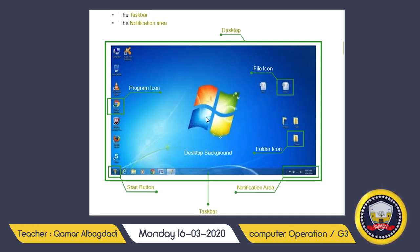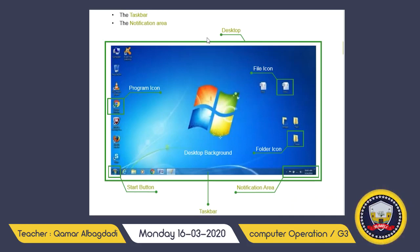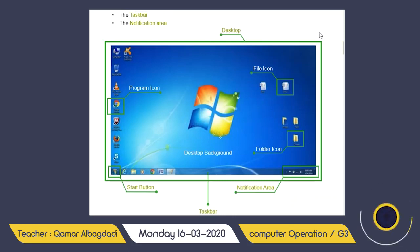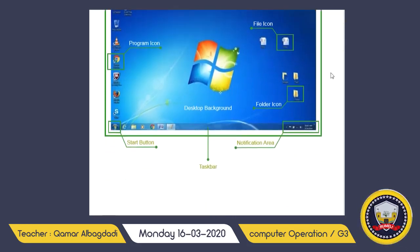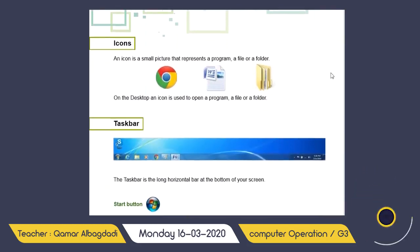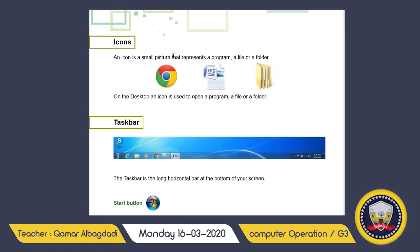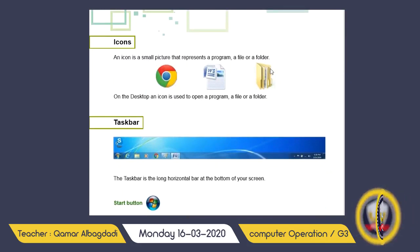We also have the desktop background. As we know, we can control this picture — we can keep it the same or we can change it. An icon is a small picture that represents a program, a file, or a folder.